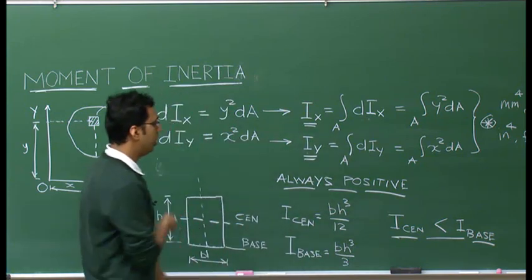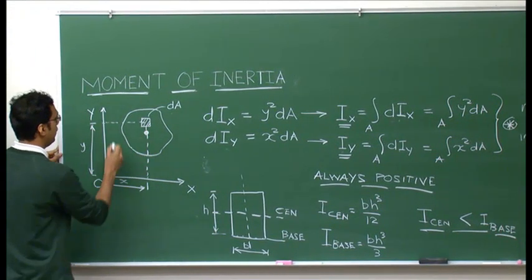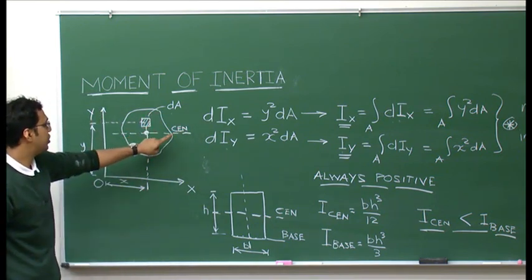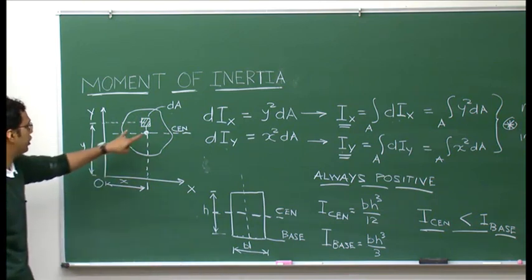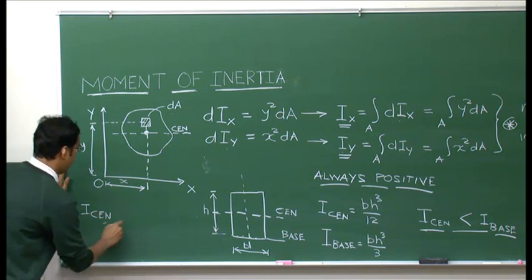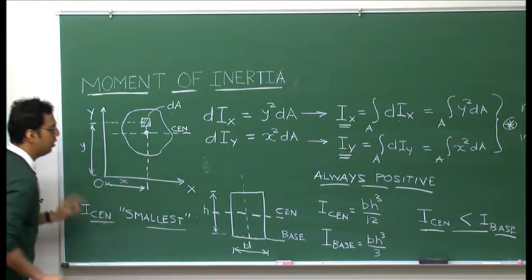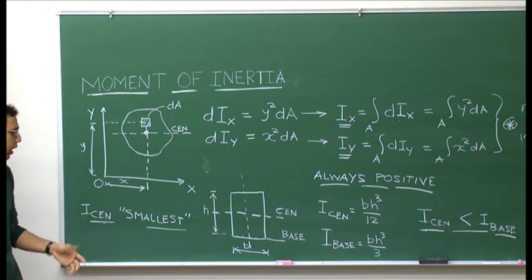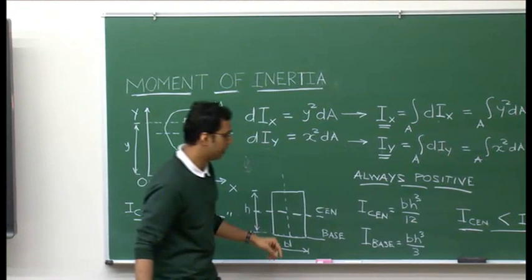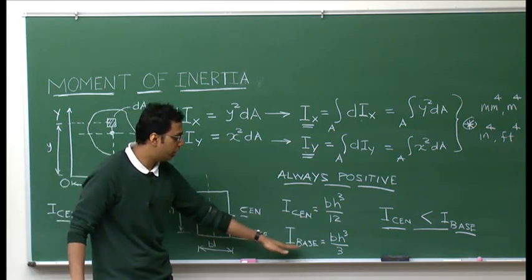Any body has its minimum — its smallest — moment of inertia about an axis passing through the centroid. Therefore, I_cen is the smallest moment of inertia. This concept will be very useful when we look into the parallel axis theorem. These standard formulas give us moment of inertia about the centroid or about some other axis for simple shapes like the rectangle.